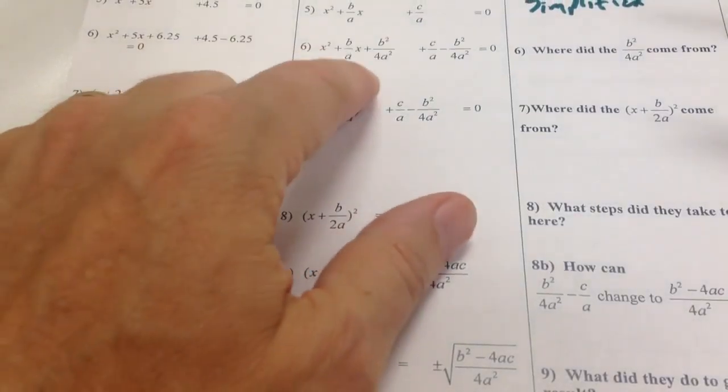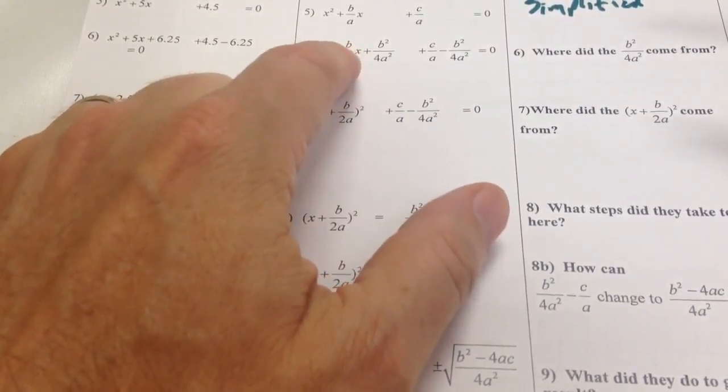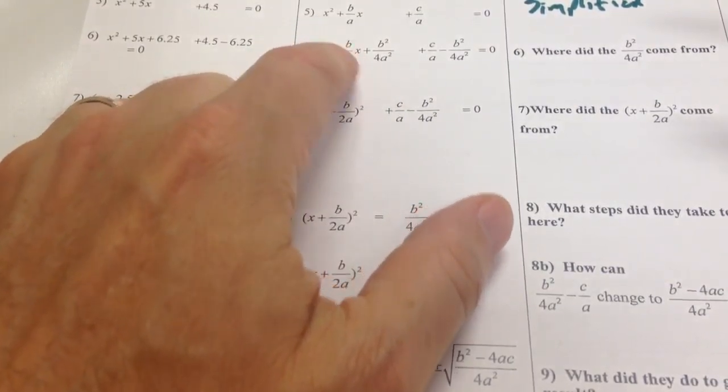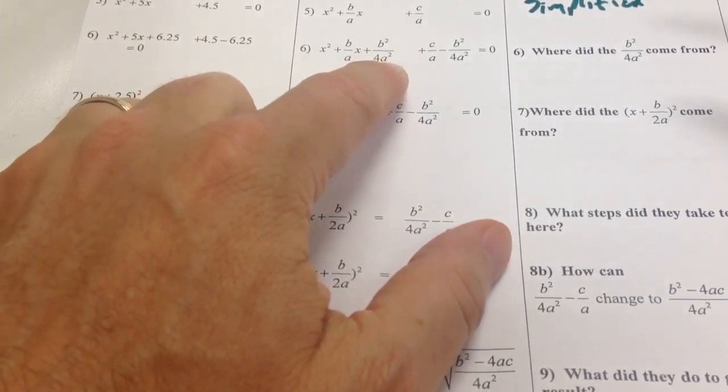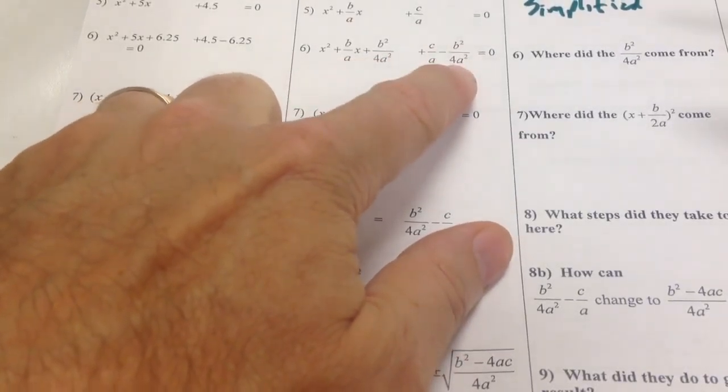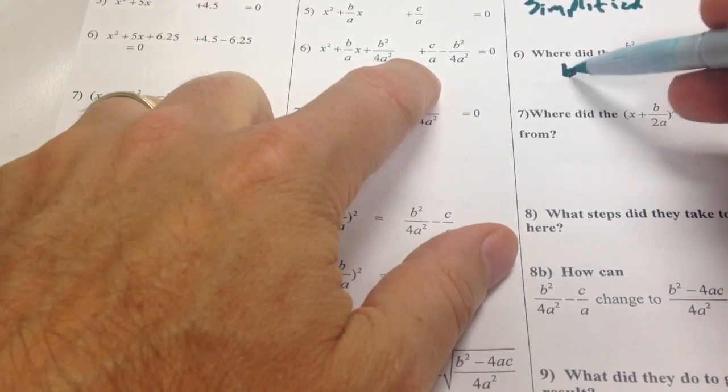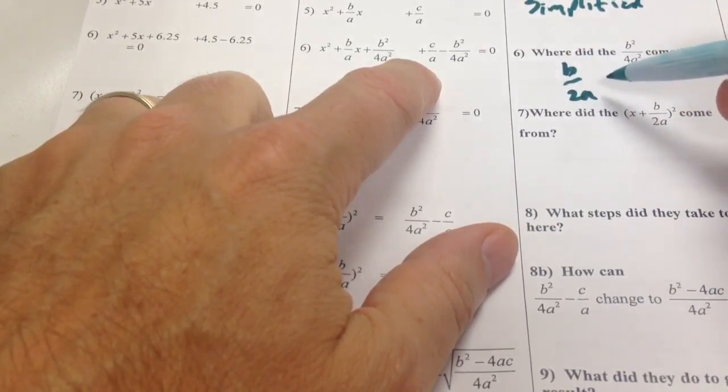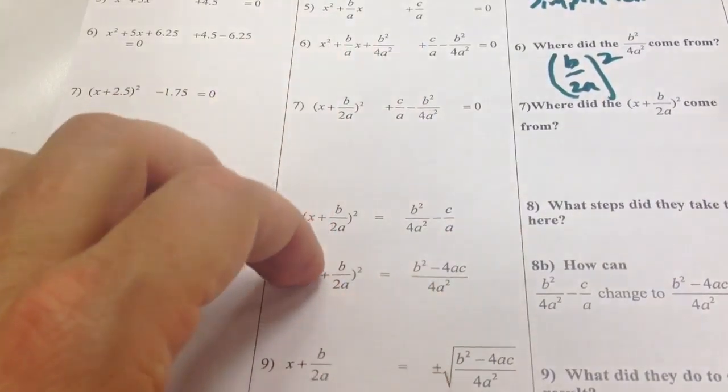And so in the same way, Kyle and Harper, they take half of that, which will be b/2a, when you take half of that. And then when you square b/2a, you get b²/4a². And then to offset that, we have the minus version of that. So where that came from is b/2a is half of b/a, and then it's that squared. So that's where that came from.